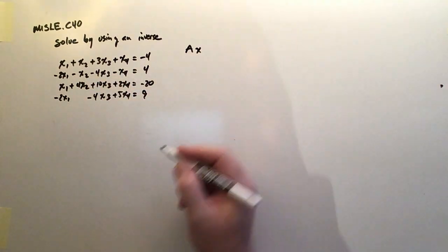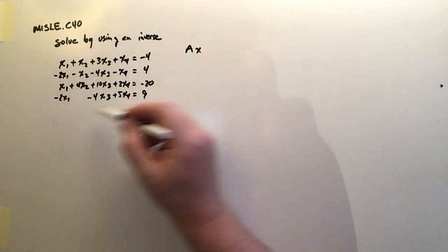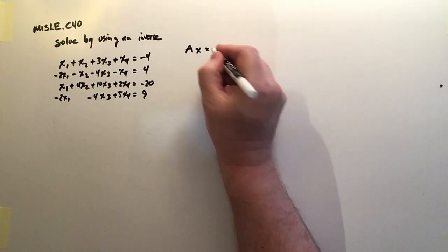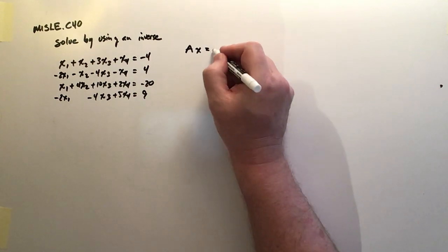And that's times my variable matrix X, which has four members, X1, 2, 3, 4. And then that's equal to this solution matrix B.